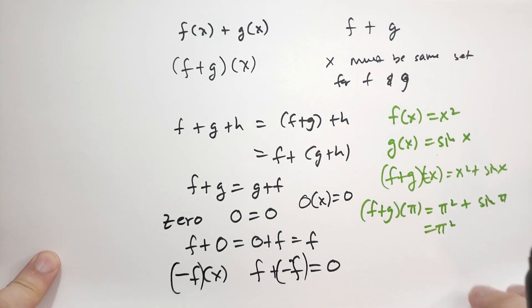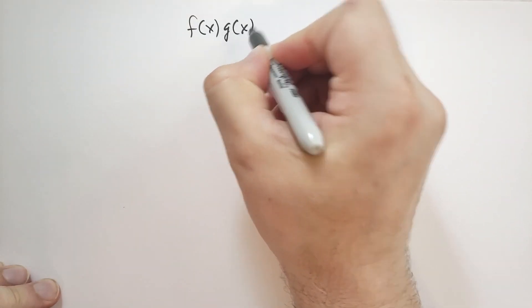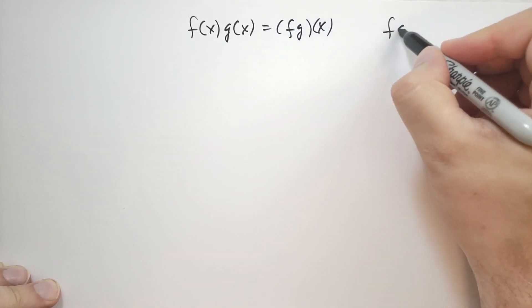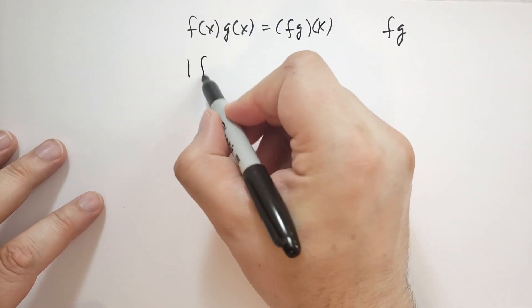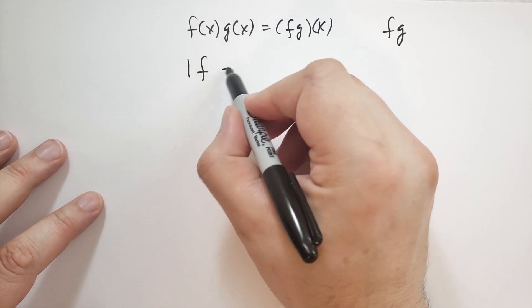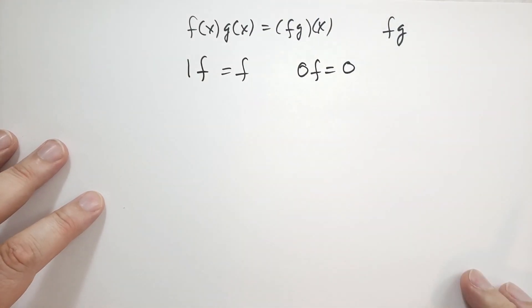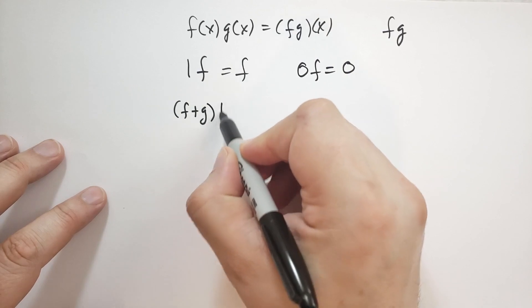We can also do products. So we can say f of x times g of x is the same as f g of x. So we'll just talk about f g as the product of two functions. And we notice that if we had one times f, that's the same as f. If we had zero times f, that's equal to zero. This is pretty obvious and straightforward.